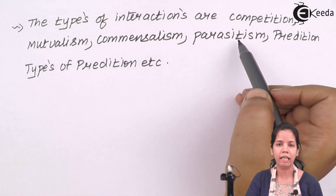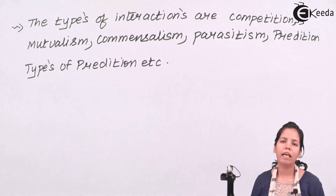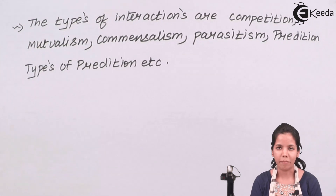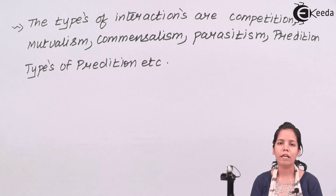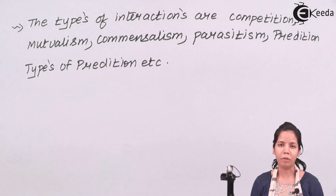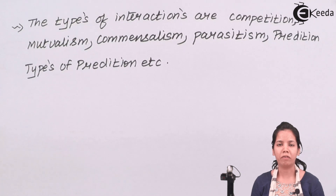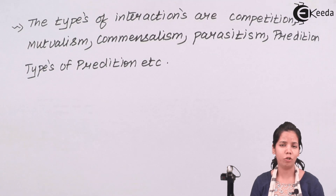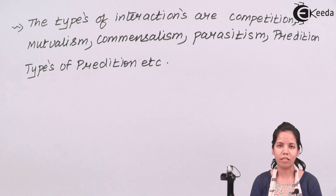Students, in this part of the chapter we have studied about the types of interactions and how different organisms interact on different levels just to survive and sustain. These interactions could be between two different carnivores, or between two different herbivores, or even between a protozoa like malaria and a human being. I hope you are clear about this concept of types of interactions. Thank you.